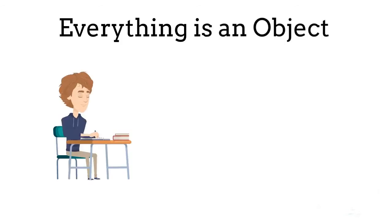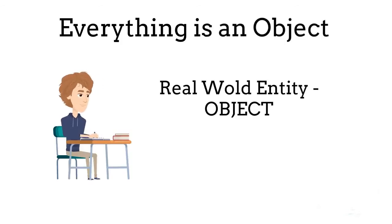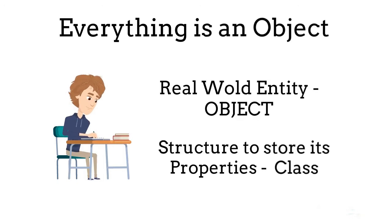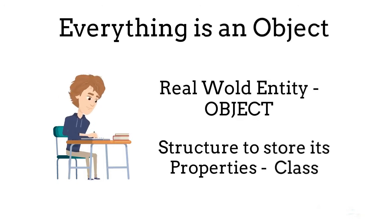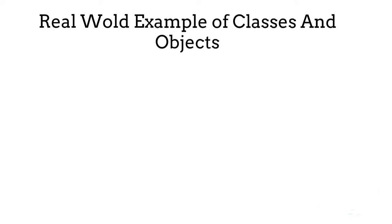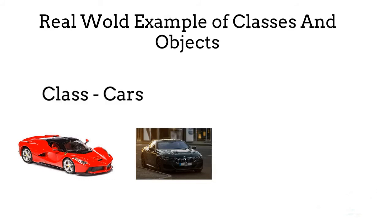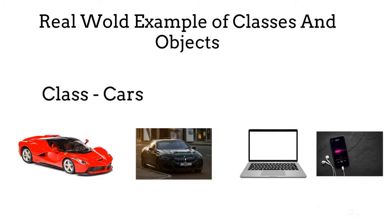In OOP, everything is an object. Every real-world entity is called an object, and its structure is called a class. If you look around yourself, everything is an object. For example, Ferrari and BMW are objects of the class 'Car'; laptops and mobiles are objects of the class 'Machine'. OOP maps real-world entities to our programs.